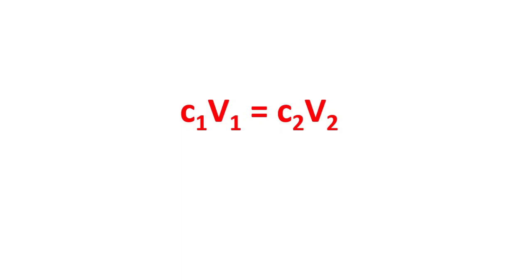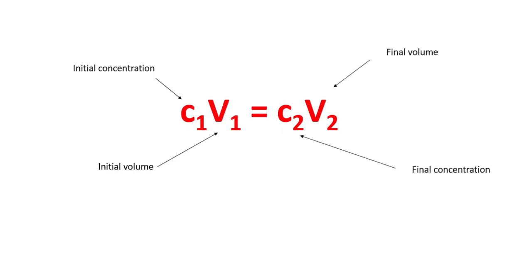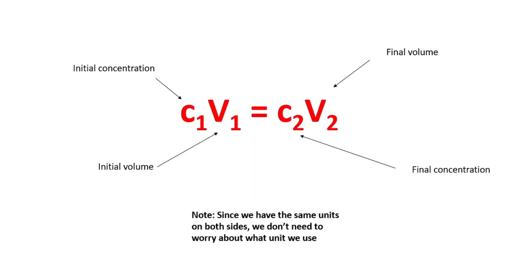Use this formula — C₁V₁ = C₂V₂ — whenever there's a before-and-after scenario with solutions. For example, if you had an original solution and then added more solvent or solute, you can use this formula to find whatever you need. C₁ is the initial concentration, V₁ the initial volume; C₂ and V₂ are the final concentration and volume. Because C and V appear on both sides, you don't need to worry about unit conversion, provided the units are the same on both sides.